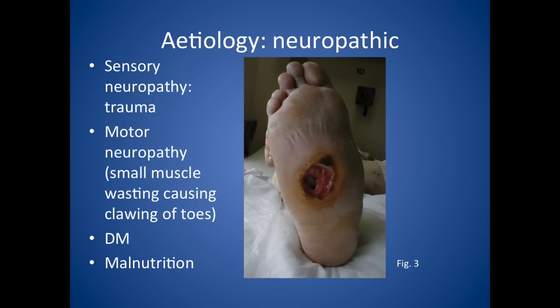For neuropathic leg ulcers, someone with a sensory neuropathy may get trauma because they can't feel a stone in their shoe, for example, and that leads to trauma over time and the skin doesn't heal. You can also get motor neuropathies leading to ulcers — for example, small muscle wasting causing clawing of the toes. You're more likely to see this in those with diabetes mellitus and also malnutrition, such as vitamin B12 deficiencies.